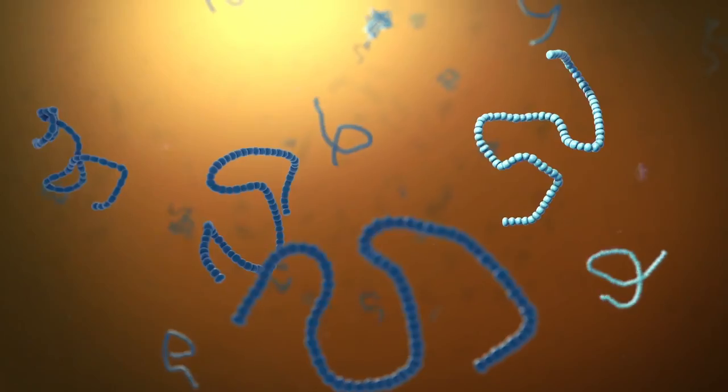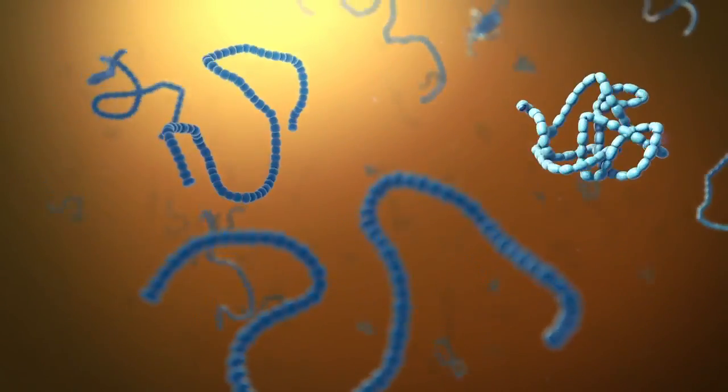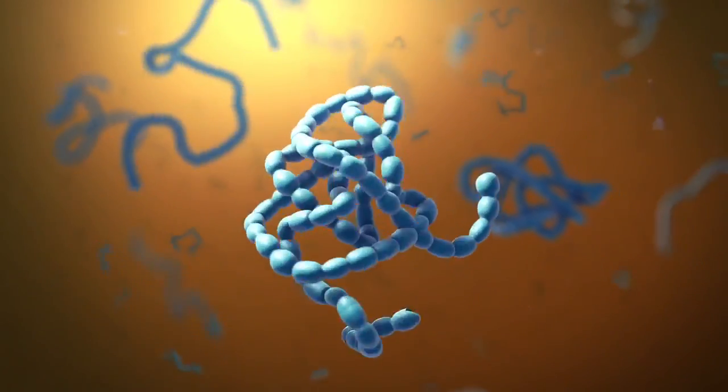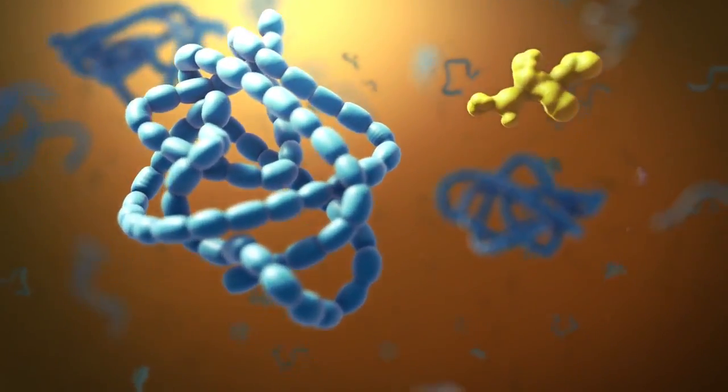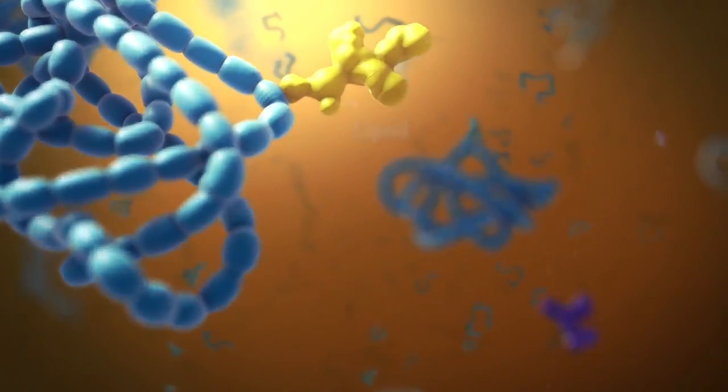As proteins move through the Golgi body, they're customized into forms that the cell can use. The Golgi body does this by folding the proteins into usable shapes, or adding other materials onto them, such as lipids or carbohydrates.